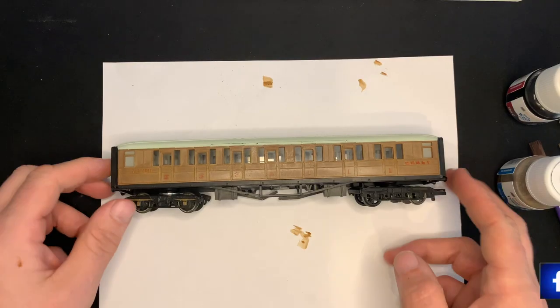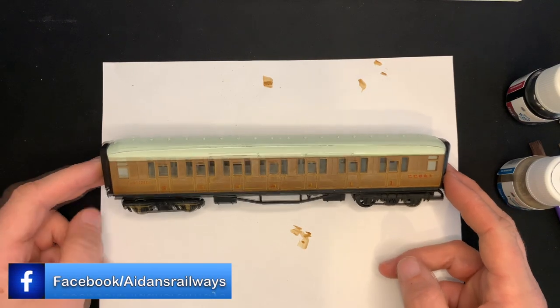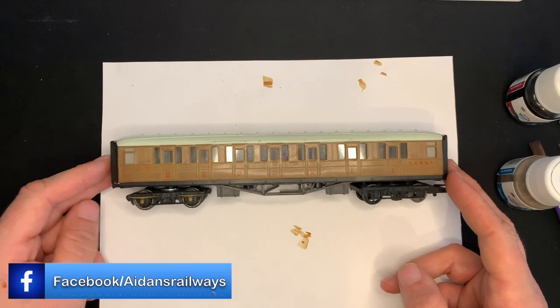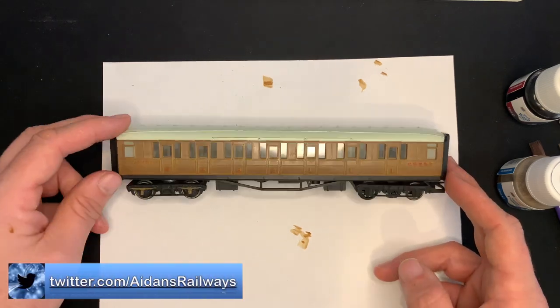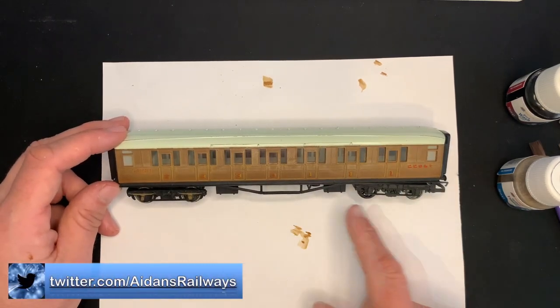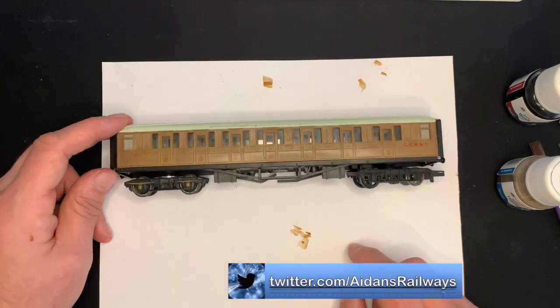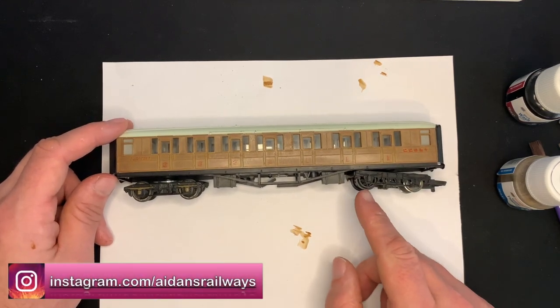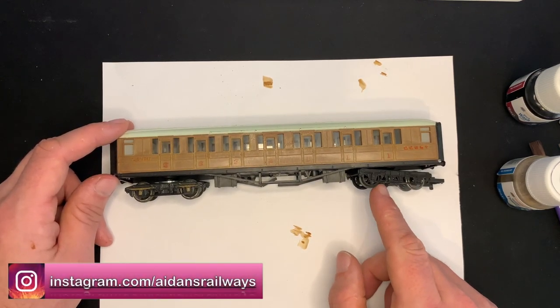So here we have our donor vehicle. This is a Railroads style Gresley teak. It's got significant damage to it. It's actually got two completely different bogies on it. It's got three different types of wheel - we've got a metal one, we've got a wagon huge look like it's a triangle spoked one, we've got some white line plastic wheels on that side.